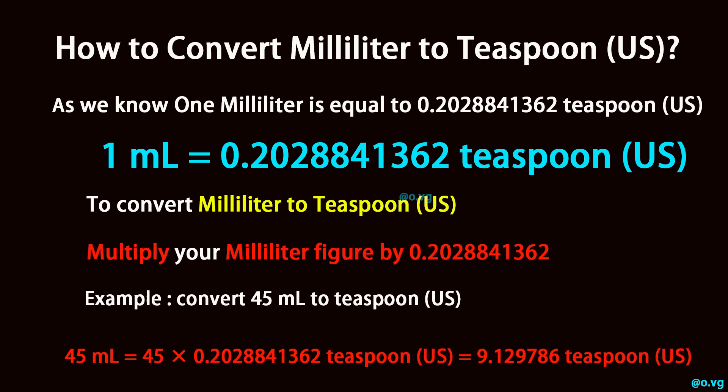Example: convert 45 milliliters to teaspoon, U.S. 45 milliliters is equal to 45 times 0.2028841362 teaspoon, U.S., which equals 9.129786 teaspoon, U.S.